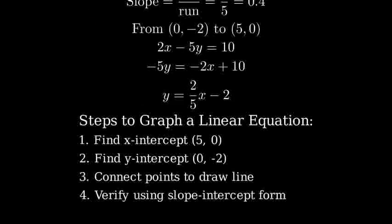In summary, we graphed the linear equation 2x minus 5y equals 10. First, finding the x-intercept at (5, 0), then finding the y-intercept at (0, -2), and finally connecting these points to draw our line. We also verified our work by converting to slope-intercept form.